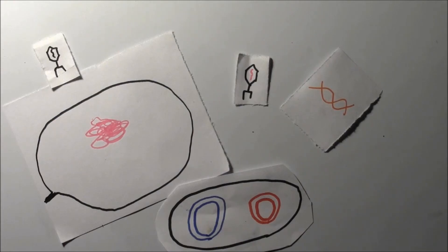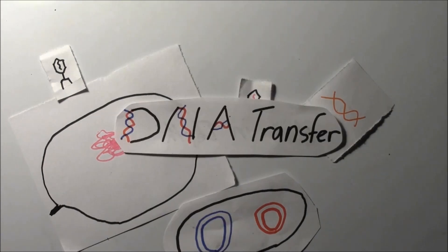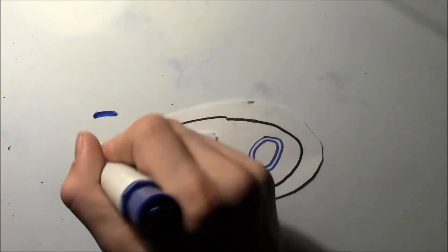We learned about transduction, transformation, and conjugation in this video, which are all types of prokaryotic DNA transfer. But really, what is the significance of DNA transfer? We learned about how bacteria can be transformed by DNA plasmid, but what's the point?